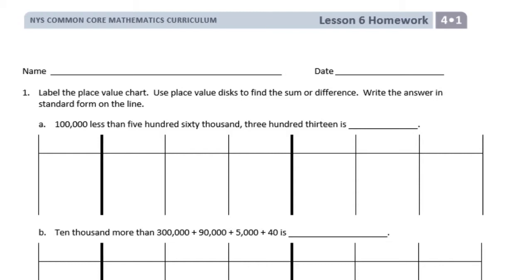A: 100,000 less than 560,313 is blank. First we need to label the place value chart. I like to start in the ones place and work my way back.